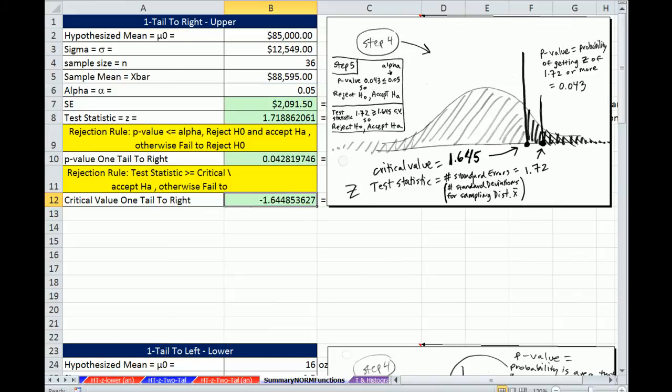We gave it 0.05. That doesn't work because these functions always go from negative infinity up to our point. So instead of putting 0.5 in, we want 1 minus. That gives us 95%. So up to there, that'll give us above. So it's 1.64 for critical value.